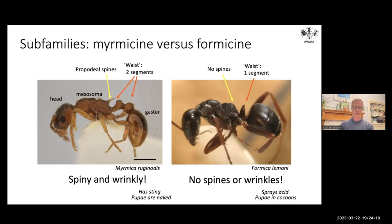As shown in the videos, Myrmicine ants have naked pupae — if you expose a nest and see naked pupae, you know you've got a Myrmicine, most likely a Myrmica. Formicine ants have pupae enclosed in cocoons — so if you expose a nest under a stone and see cocoons, you automatically know it's a Formicine, either Formica or Lasius.